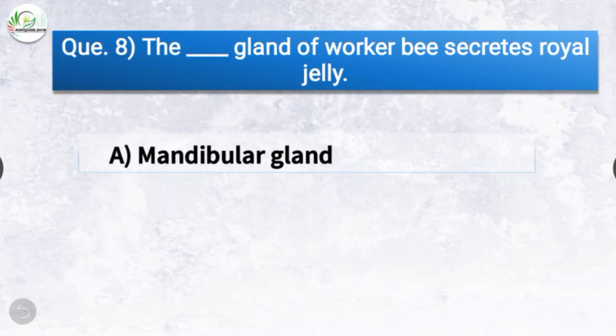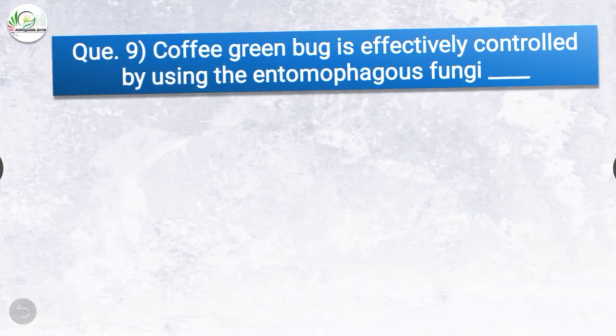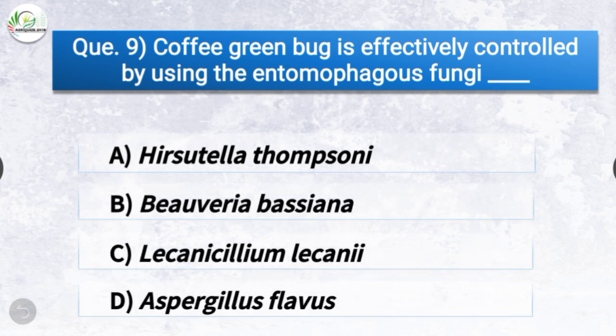Question number eight: The dash gland of worker bee secretes royal jelly. The options are mandibular gland, hypopharyngeal gland, Dufour's gland, or rectal gland. The correct answer is option B, hypopharyngeal gland — the hypopharyngeal gland of worker bee secretes royal jelly.